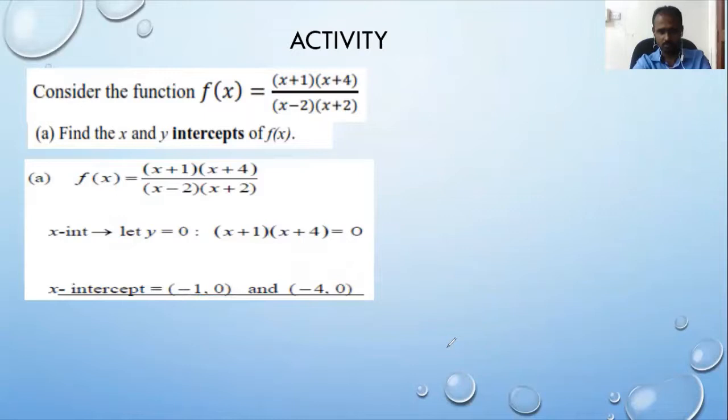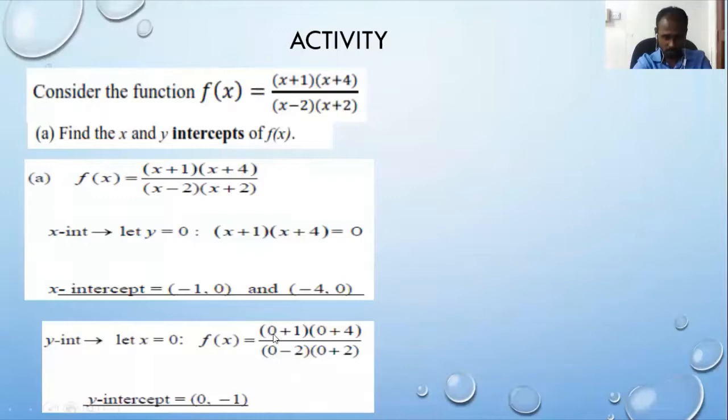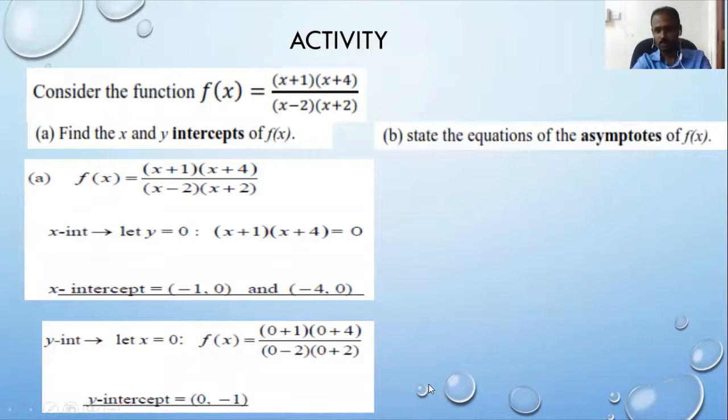For the y-intercept, in place of x put zero: (0+1)(0+4) / ((0−2)(0+2)) gives −1. The y-intercept is written as (0, −1).